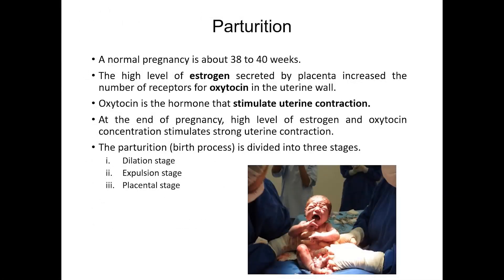Parturition or childbirth is the ending of the pregnancy, which normally lasts about 38 to 40 weeks. It is the process of bringing forth the child from the uterus. The high level of estrogen secreted by the placenta increases the number of receptors for oxytocin in the uterine wall. Oxytocin is the hormone that stimulates uterine contraction. At the end of pregnancy, high levels of estrogen and oxytocin stimulate strong uterine contractions. Parturition is divided into three stages: dilation, expulsion, and placental stage.